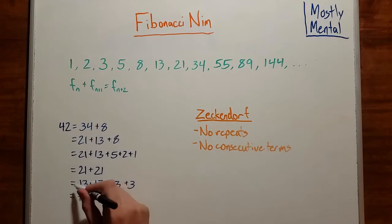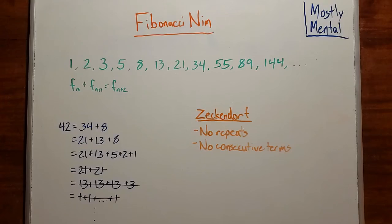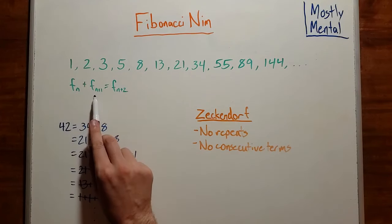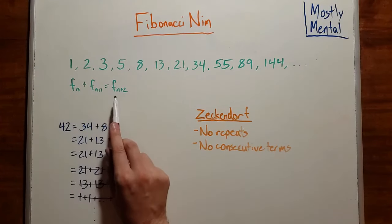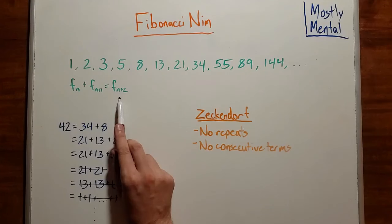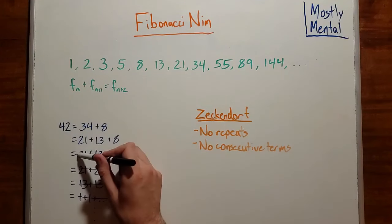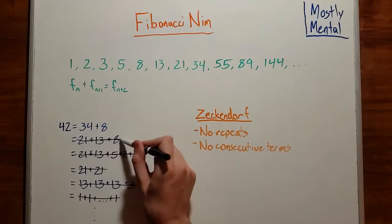That eliminates sums like this, this, and this. And remember, these are the Fibonacci numbers we're dealing with, and they're defined by the relation that the sum of any two consecutive Fibonacci numbers gives us the next one. So there's something weird going on with Fibonacci numbers and consecutive terms, so we'll add the rule that we don't want any consecutive terms either.